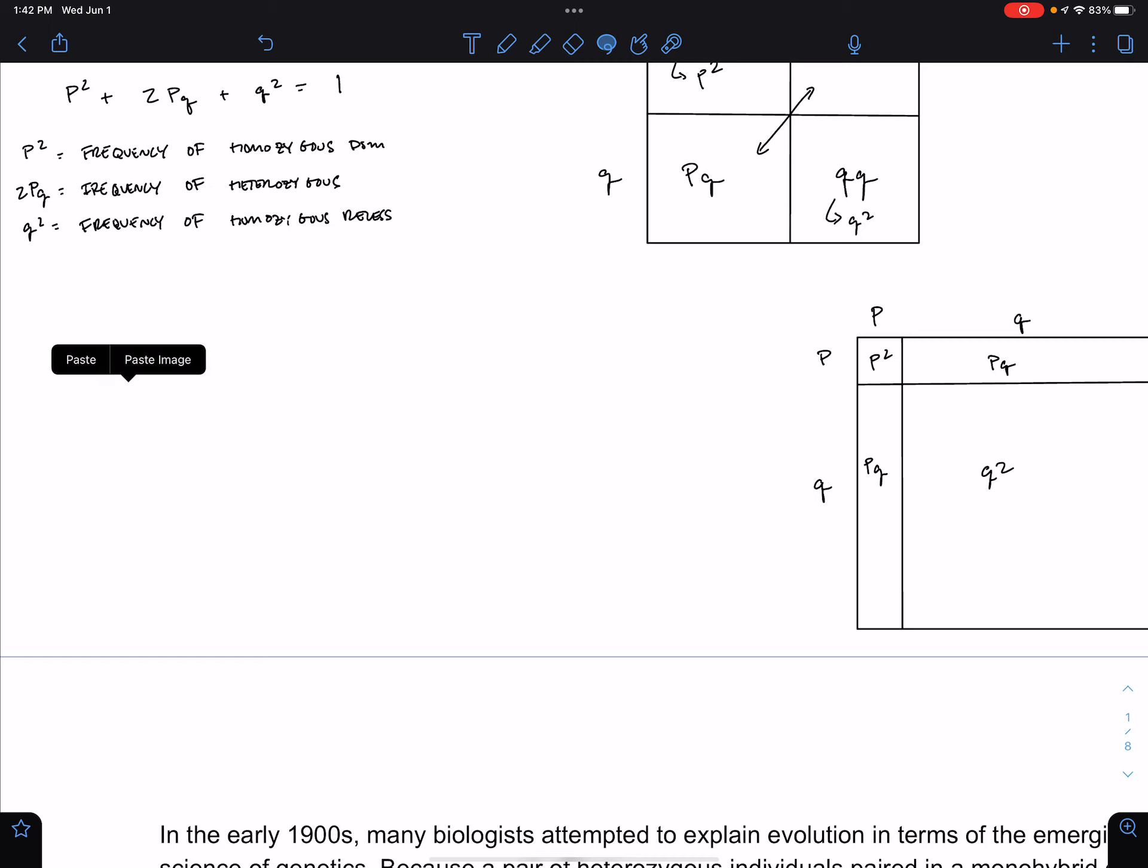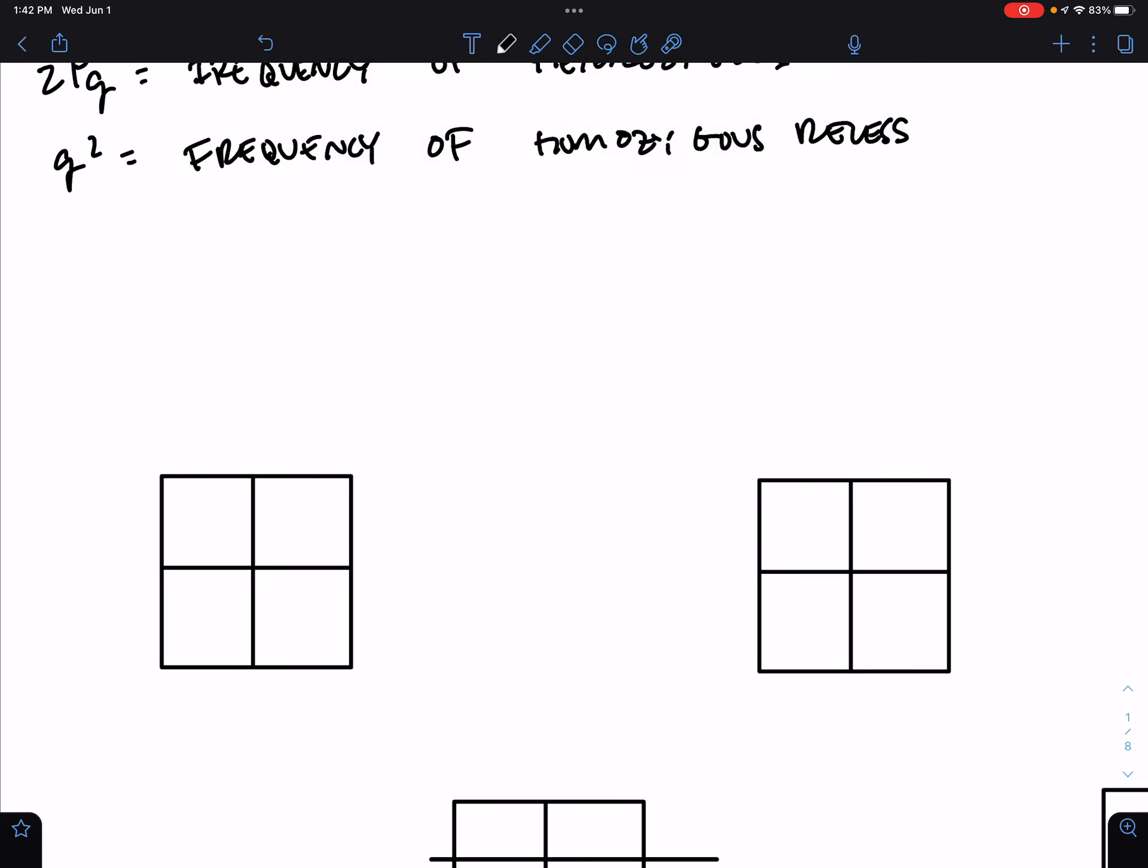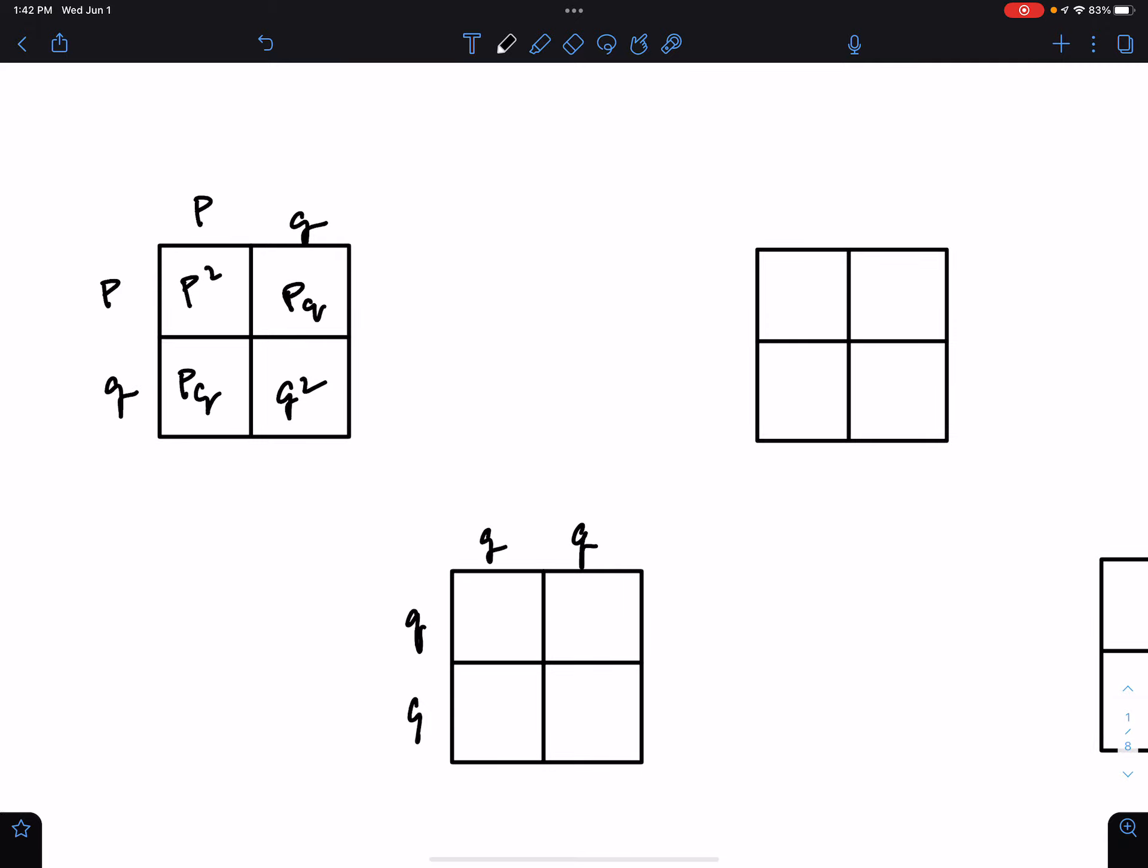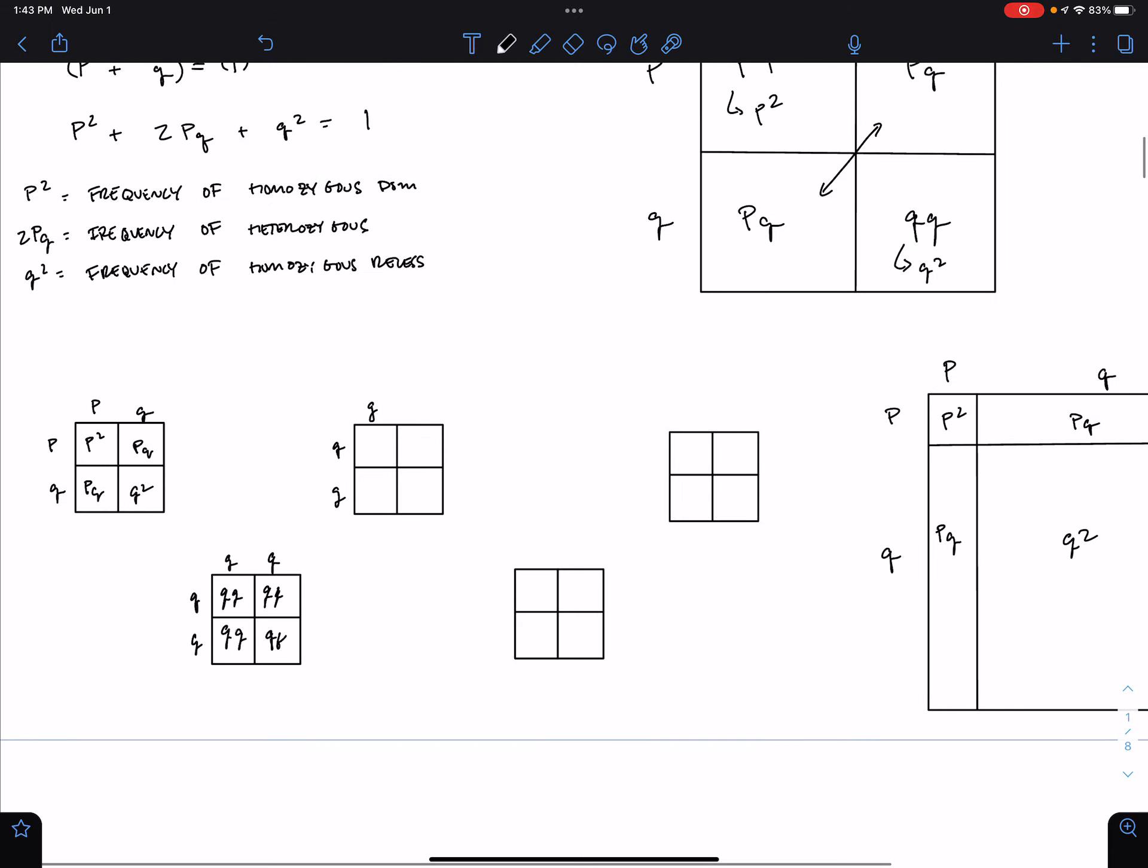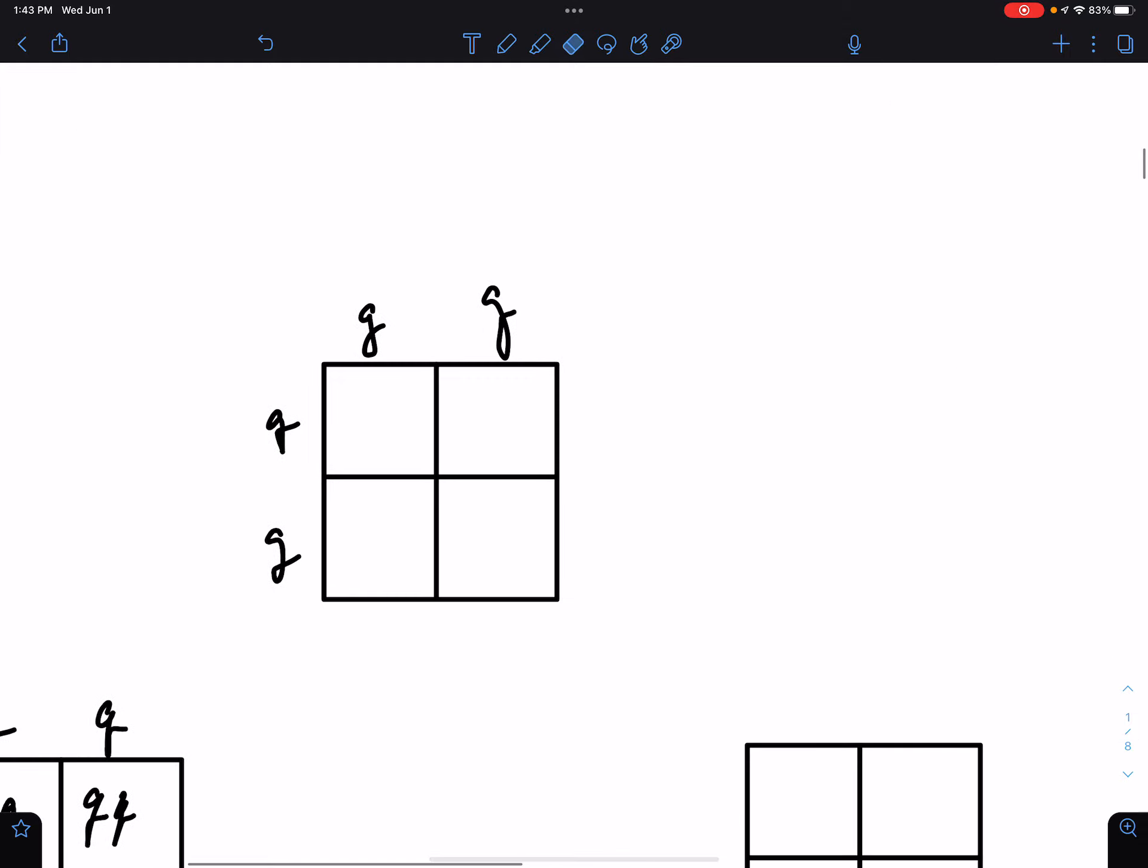If we took all the Punnett squares of all the individual matings within the population and added them all together, imagine this was a cross between two heterozygous individuals. But this was a cross between homozygous recessive individuals. And so was this. And so was this.